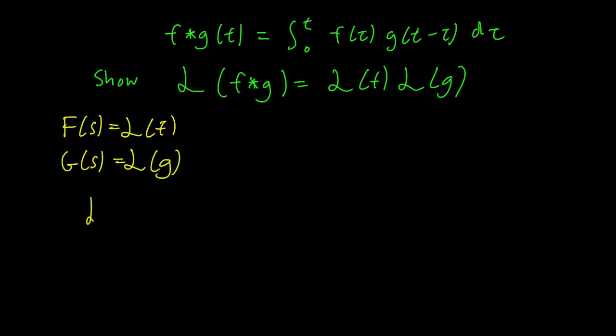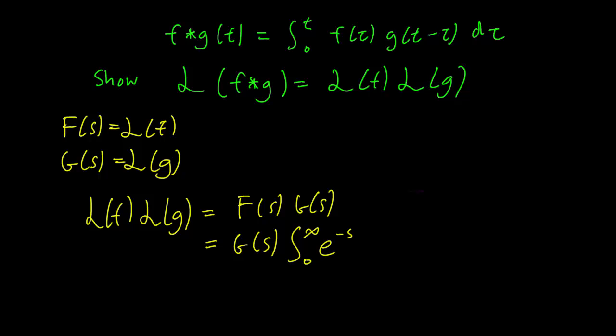And let's see, so we have Laplace transform of f times the Laplace transform of g, this being equal to F(s)G(s), but this of course is the same thing as G(s) times the Laplace transform of f and that's just going to be e^(-sτ) little f(τ) dτ.